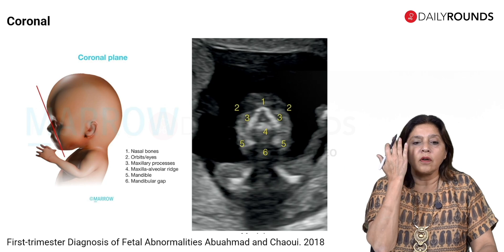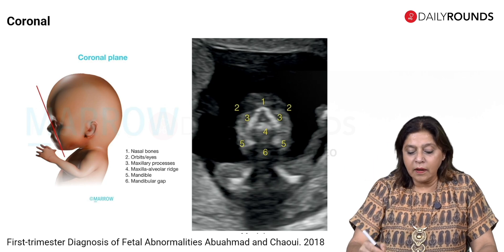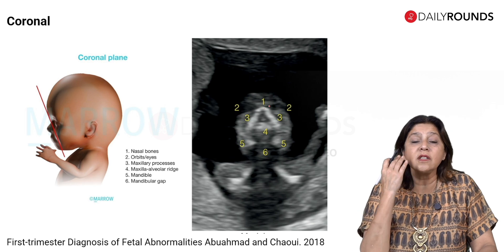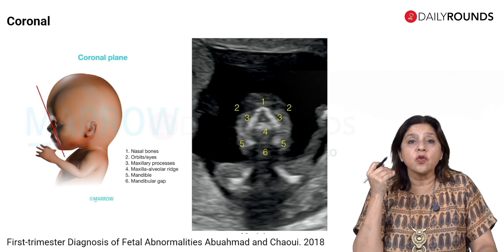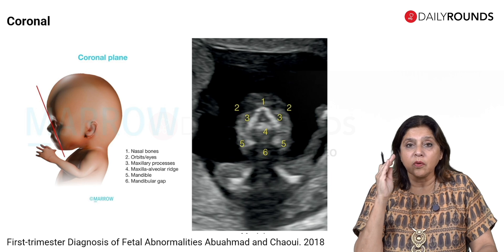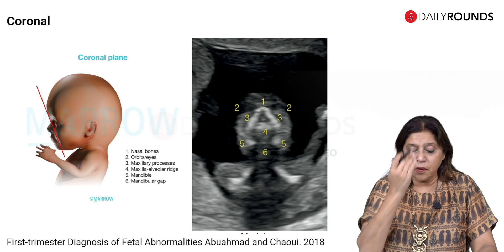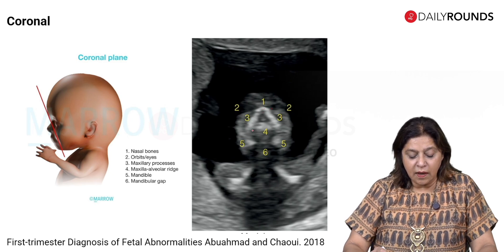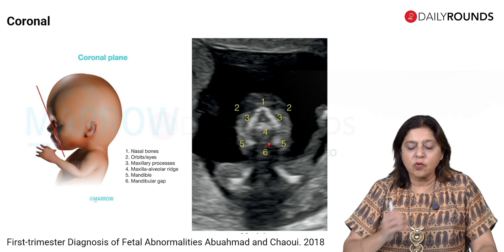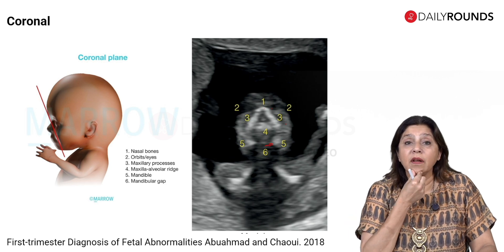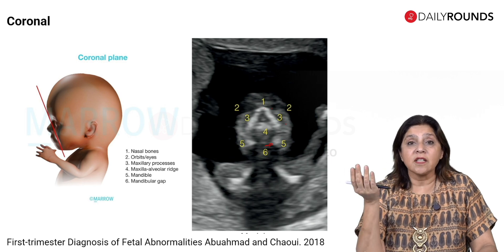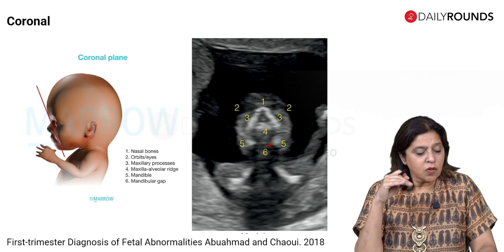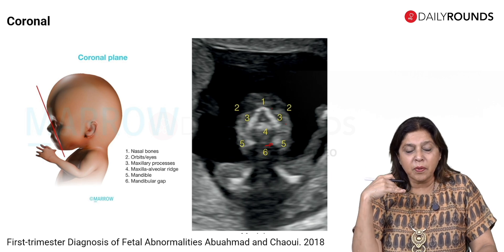Moving to the coronal plane, you try to see the two nasal bones. This is useful when you're unsure whether you're seeing an absent nasal bone — bring the probe to view from the front and see the two nasal bones on top of the two maxillary processes. You also see the alveolar ridge and the mandibular gap, which is important — if the gap is not there, there is a higher chance of micrognathia.